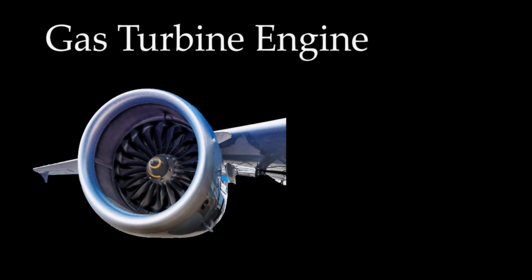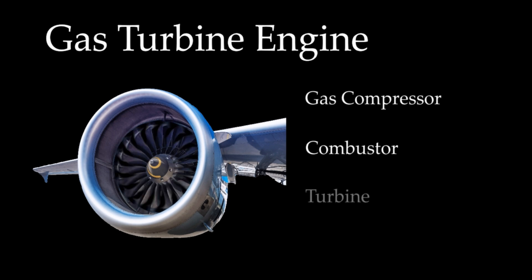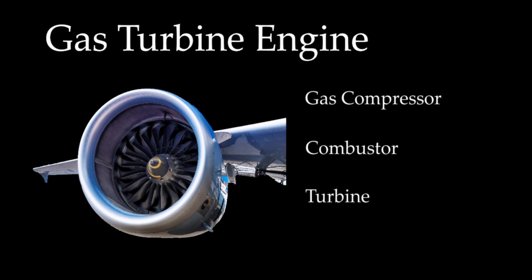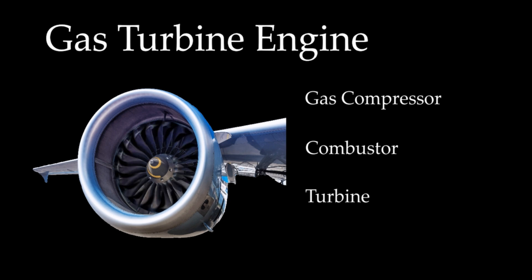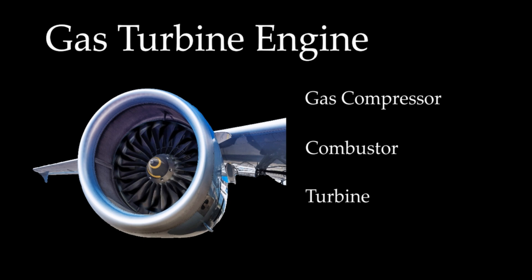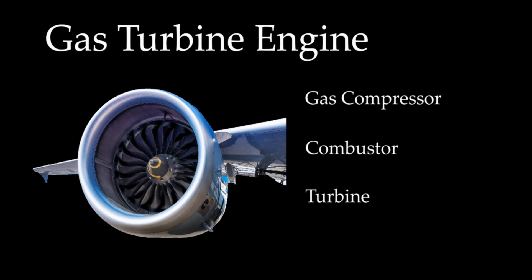A gas turbine is a rotary engine that extracts energy from a flow of combustion gases. It has three main parts. First, the compressor — it draws air into the engine, pressurizes it, and feeds it to the combustion chamber at speeds of hundreds of miles per hour.